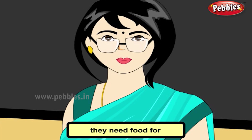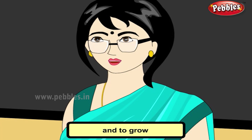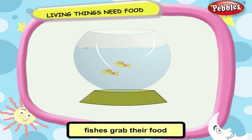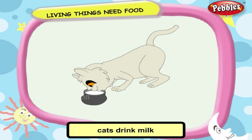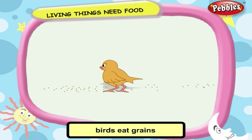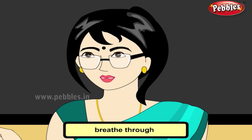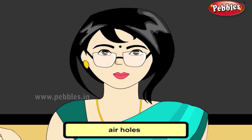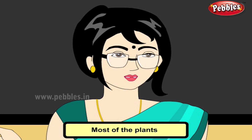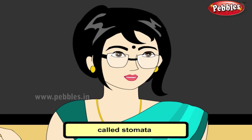Living things need food. They need food for energy, which helps them to move from place to place and to grow. Fishes grab their food in the water. Cats drink milk. Birds eat grains. All living things breathe, but different animals breathe through different body parts such as lungs, gills, air holes and skin. Most plants breathe through tiny pores in their leaves called stomata.